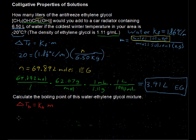So, this constant here is equal to, for water, is 0.52 degrees Celsius per molality.